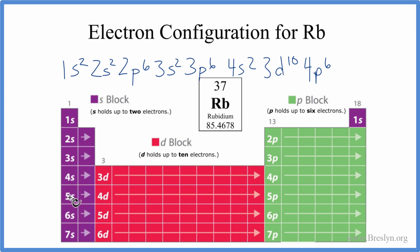4p, we go to 5s. And we could put 2 in 5s. But we really only need 1 because that'll all add up to 37. So we're just going to put 1 right here.